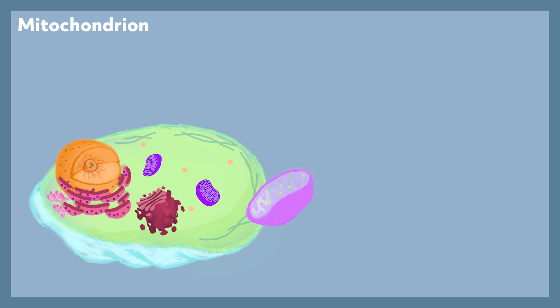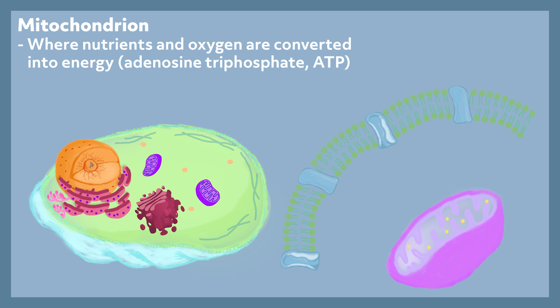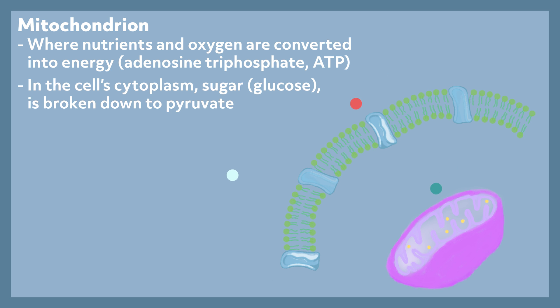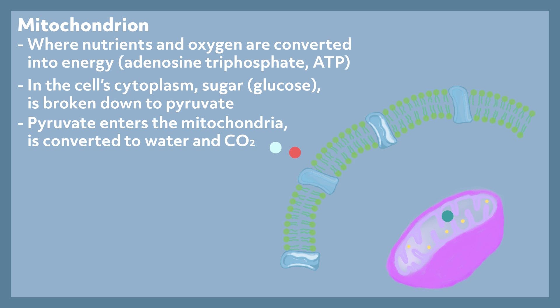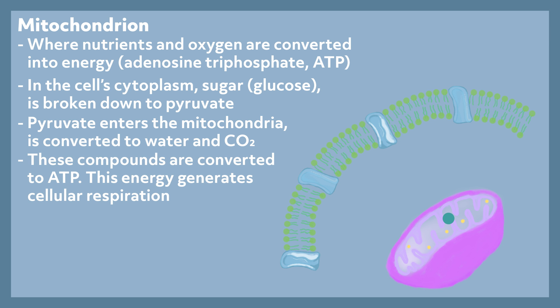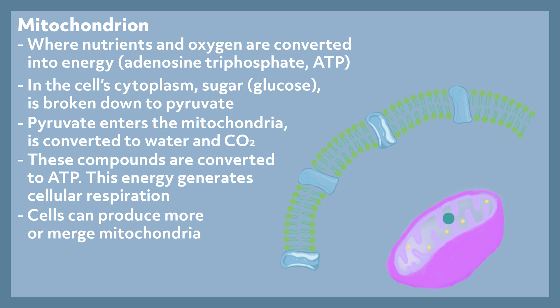Mitochondria. The mitochondria is sort of like the cell's generator — you may have heard it referred to as the cell's powerhouse. The mitochondria is where nutrients and oxygen are converted into energy, more specifically adenosine triphosphate (ATP). The two membranes work together to allow specific molecules into the matrix. In the cytoplasm, glucose is broken down into pyruvate, which enters the mitochondria and is converted to water and carbon dioxide, then to ATP, generating cellular respiration. The number of mitochondria varies by cell depending on energy needs, and cells can produce more or merge them. Muscle cells, for example, can contain thousands of mitochondria.